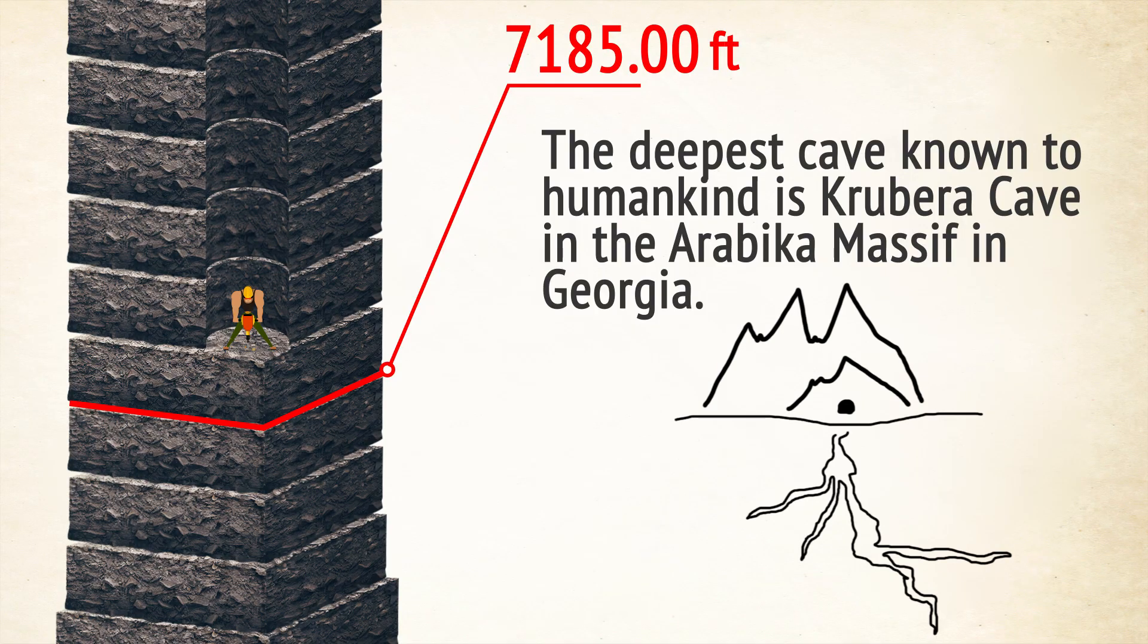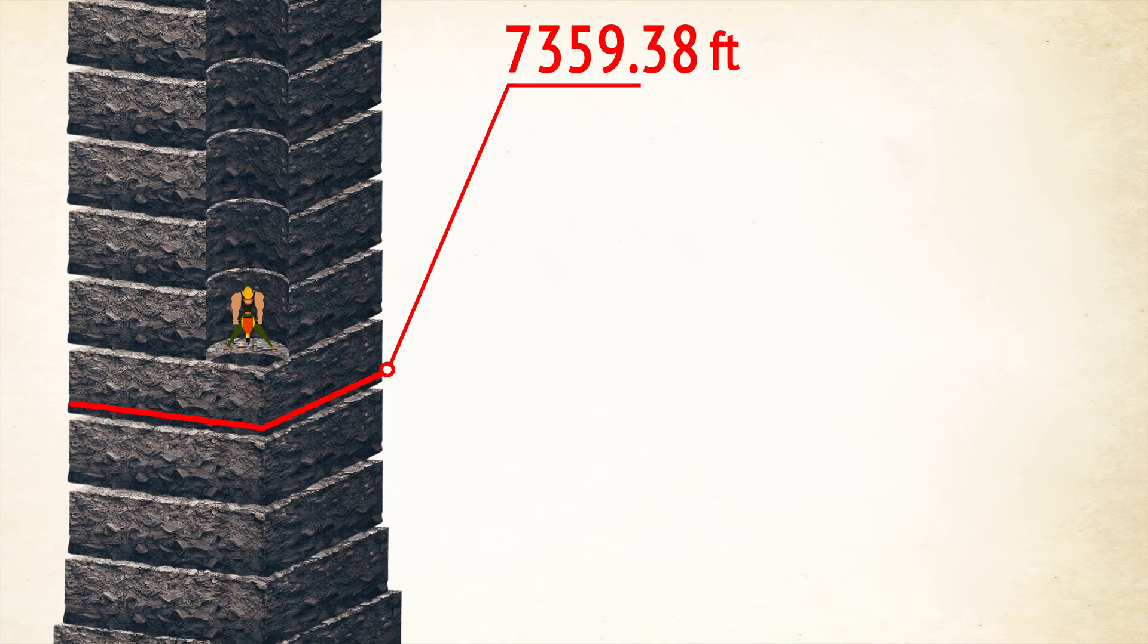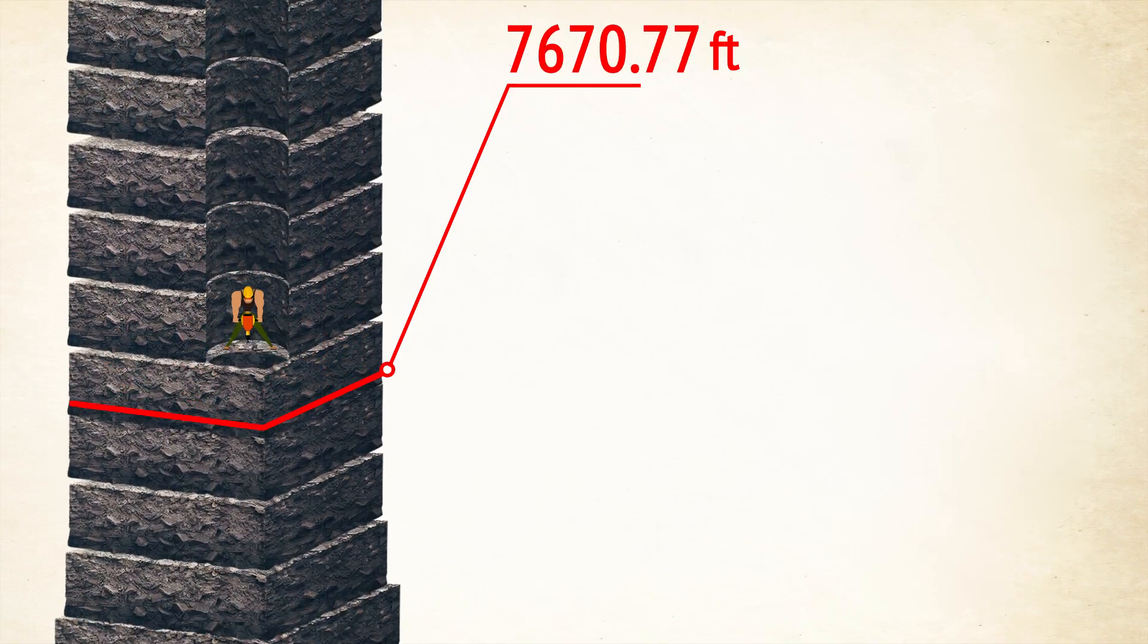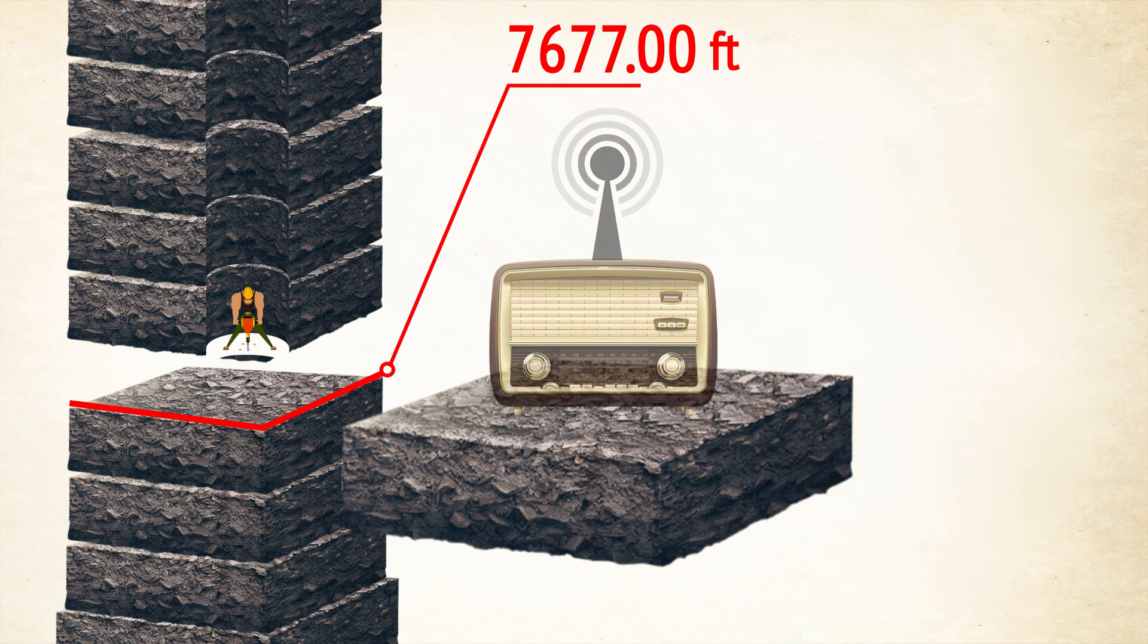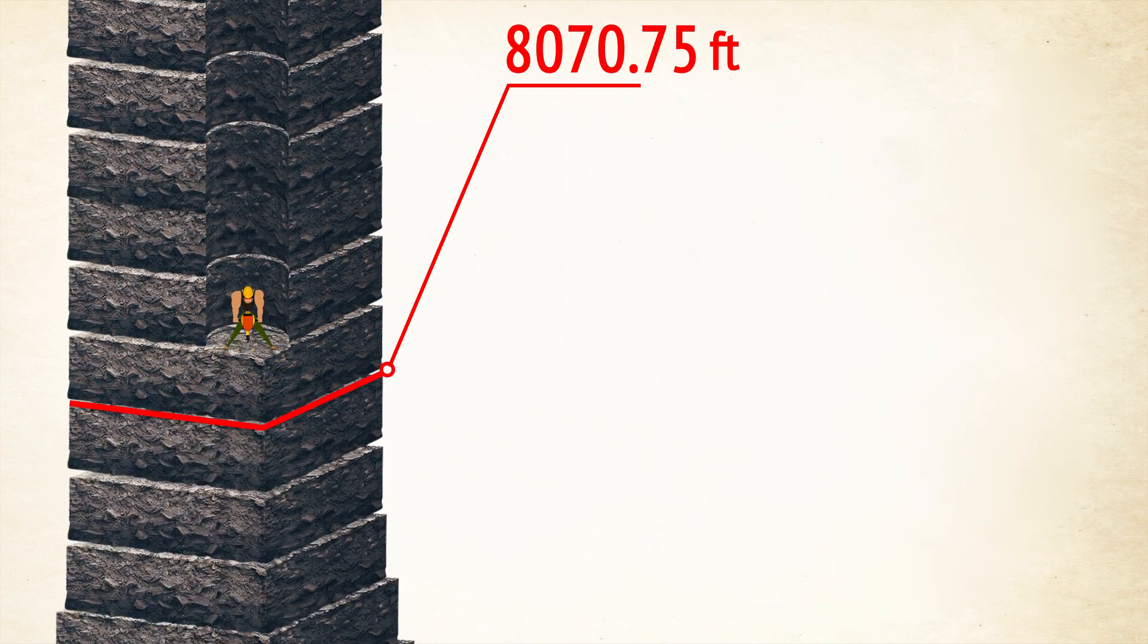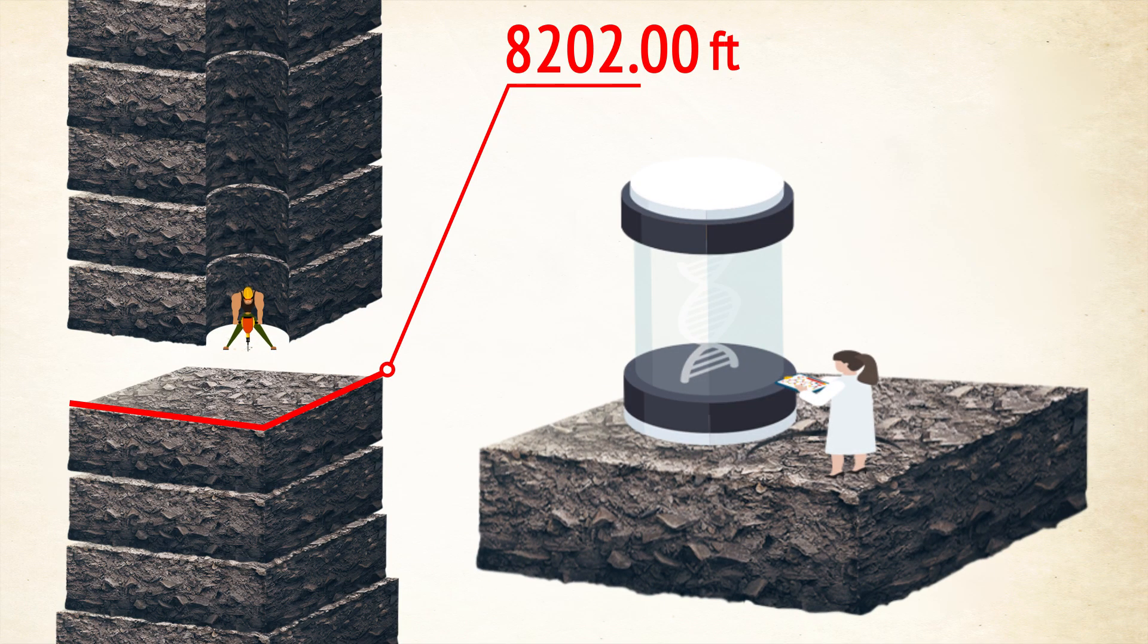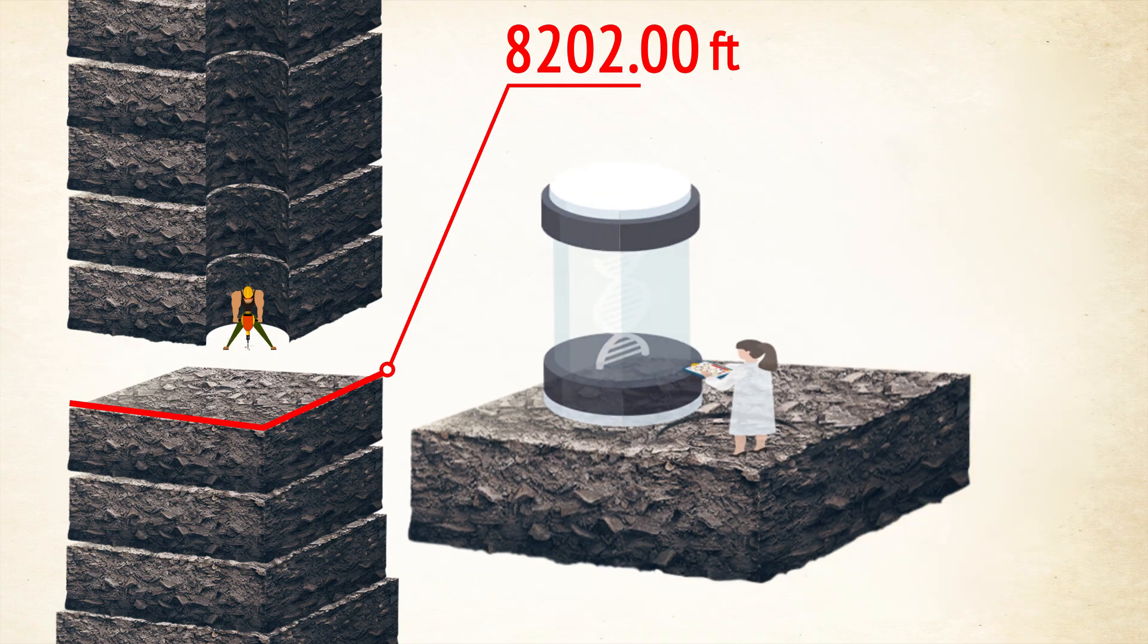At 7,677 feet below the Earth's surface, the deepest radio broadcast took place. It was held by CBC and happened in Creighton Mine, Ontario, Canada in 2005. The deepest laboratory in the world is the Jinping Underground Laboratory in China, and it is situated 8,202 feet underground.